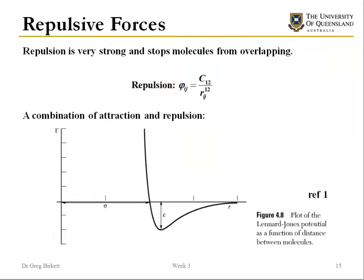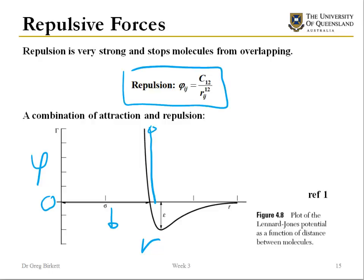One element is still missing to build that model: the repulsive force. When you bring molecules close together they strongly repel each other. Plotting interaction strength versus molecular separation, as molecules come together the interaction becomes very strongly positive — positive means repulsion, negative means attraction. This repulsion has been estimated as proportional to 1/R¹², though this is not exact, it is a reasonable approximation.